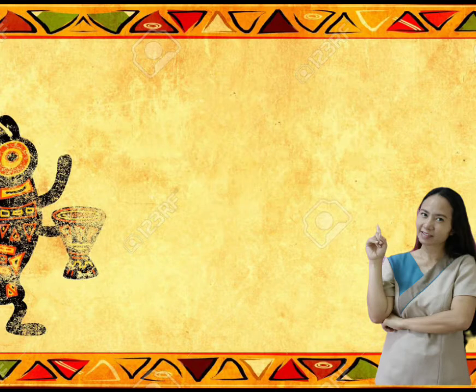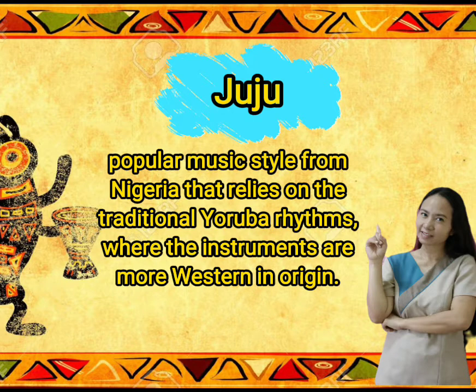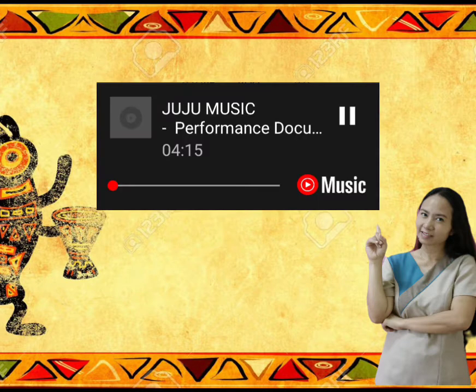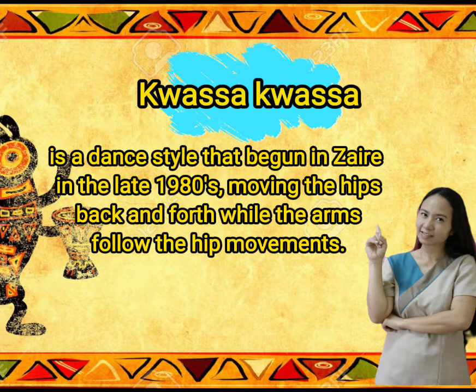Our next genre is Juju. Juju is a popular music style from Nigeria that relies on traditional Yoruba rhythms, where the instruments are more western and original. Listen to the music of Juju. Next, we have Kwasa-Kwasa. Kwasa-Kwasa is a dance style that began in Zaire in the late 1980s, moving the hips back and forth while the arms follow the hip movement. Listen to the music of Kwasa-Kwasa.